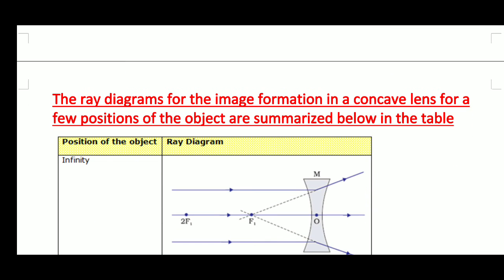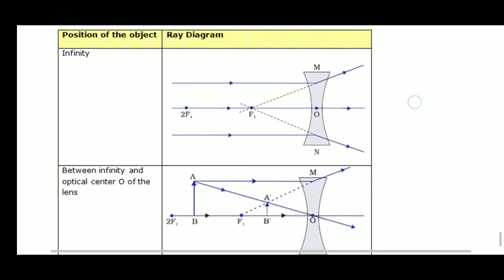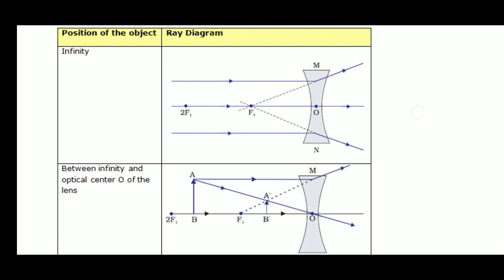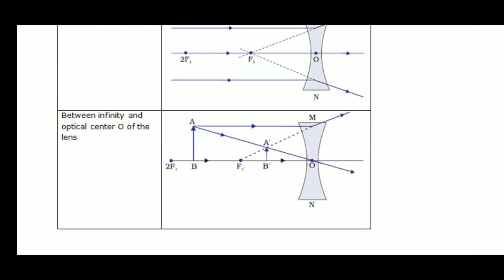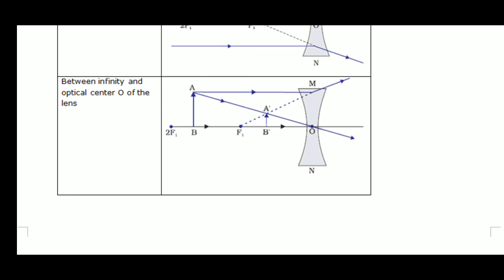Now see the ray diagrams for image formation in a concave lens for a few positions of the object, summarized in a table. There are only two situations. First, when the object is at infinity, the rays are parallel to the principal axis. Both will diverge on the right side of the lens, so we extend them back, and they will appear to intersect at focus. Second case: object anywhere between infinity and optical center — here taken at AB. We take two rays: one parallel to the principal axis will diverge, and one passing through the optical center goes straight. On the left side of the lens there will be a diminished image, which is virtual and erect.